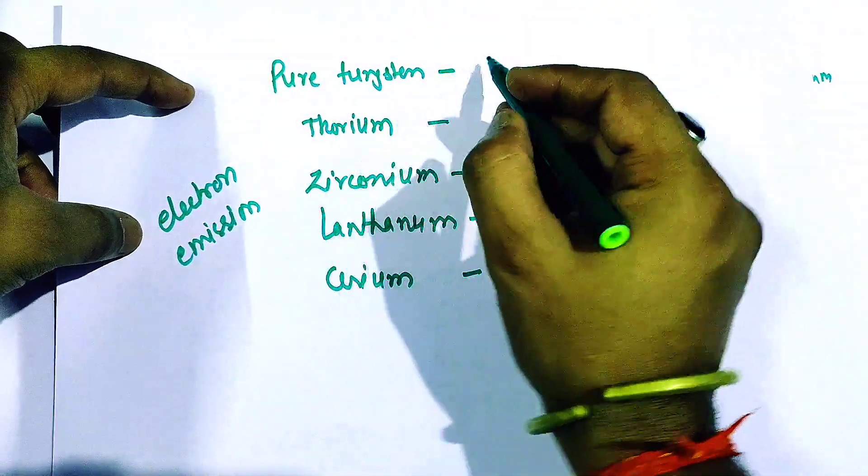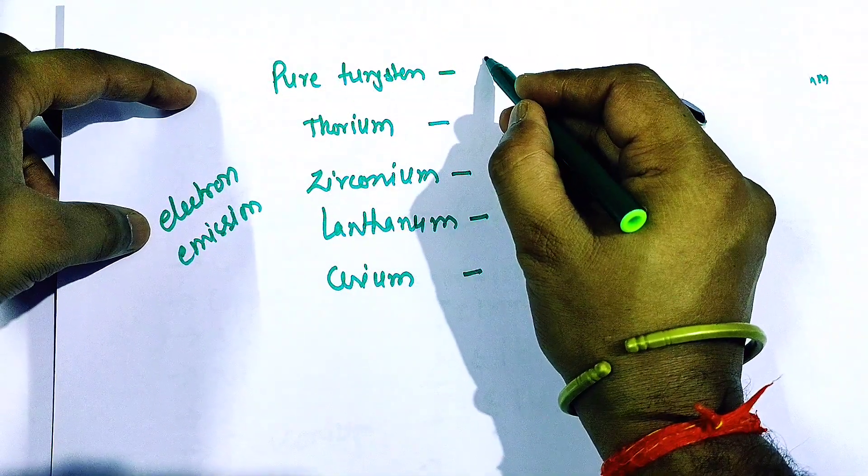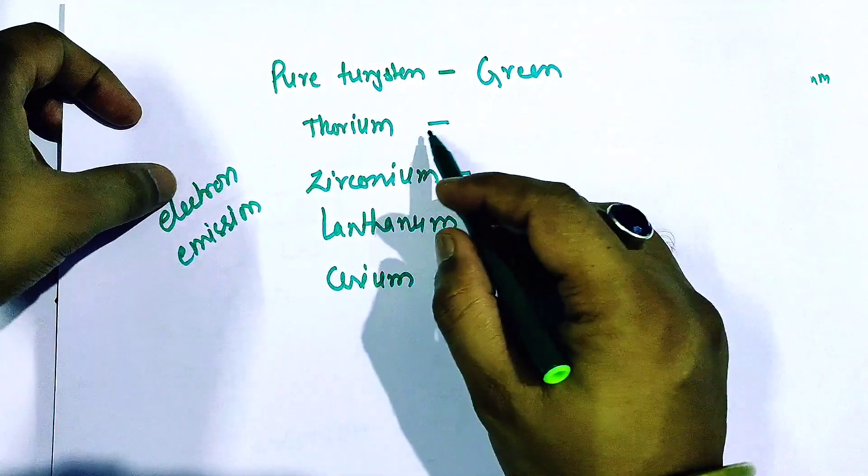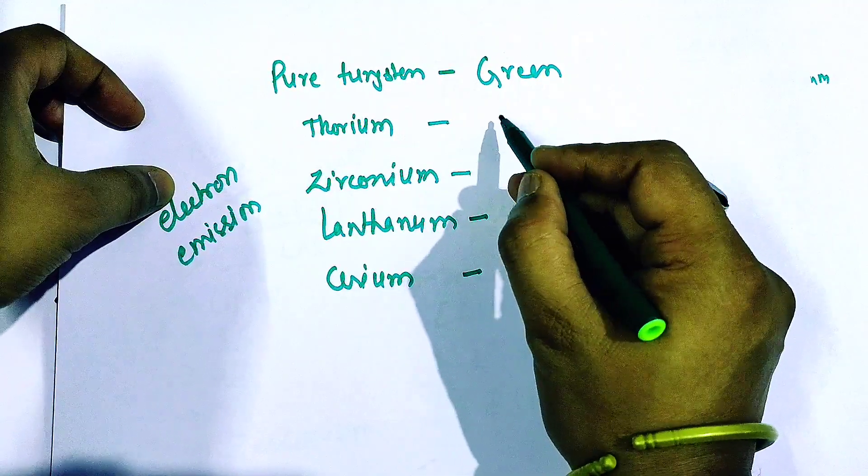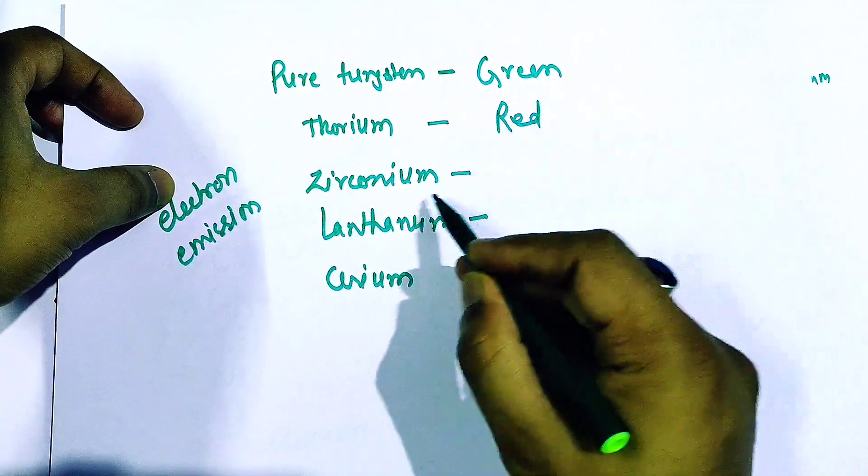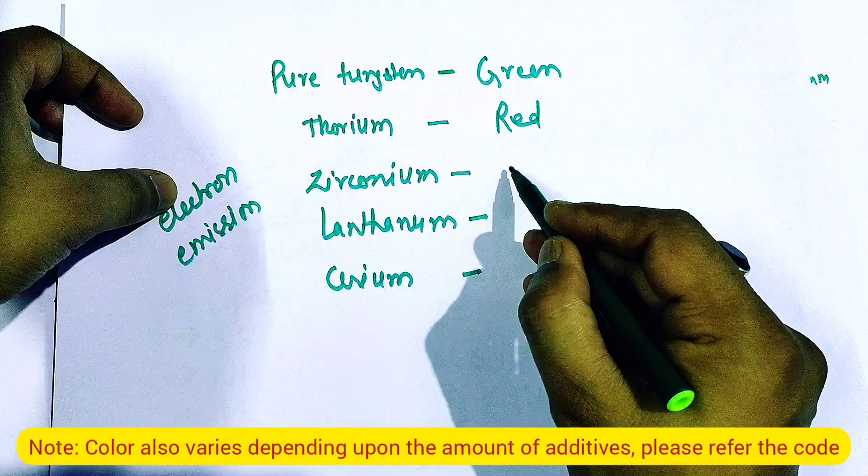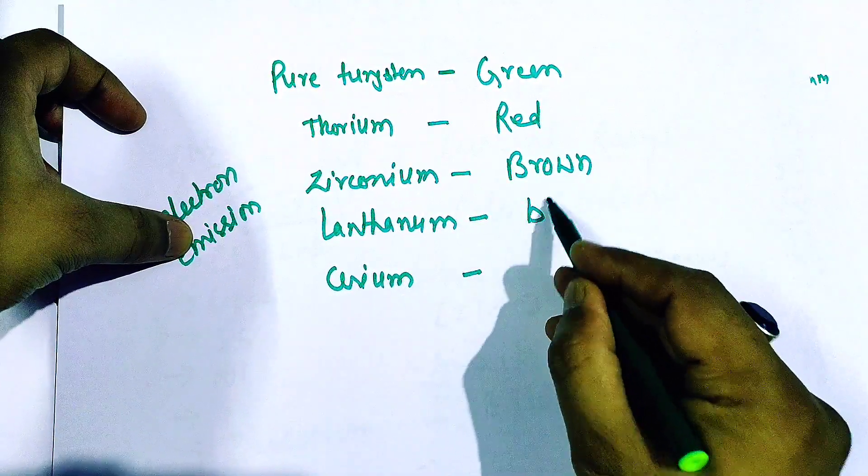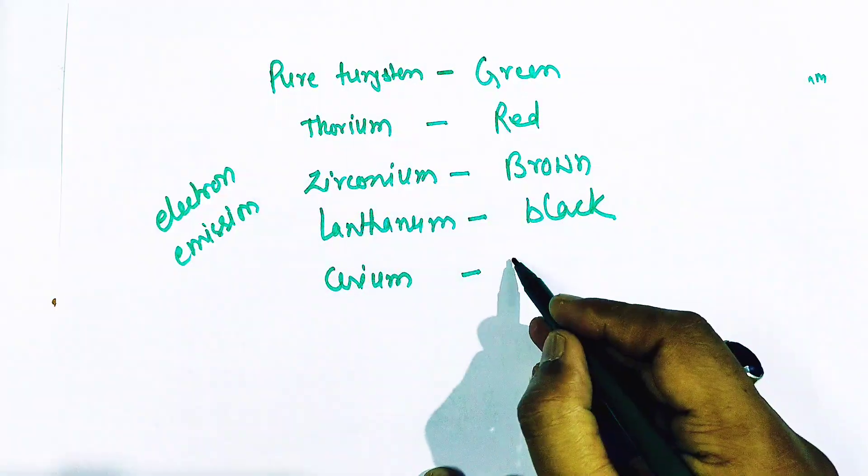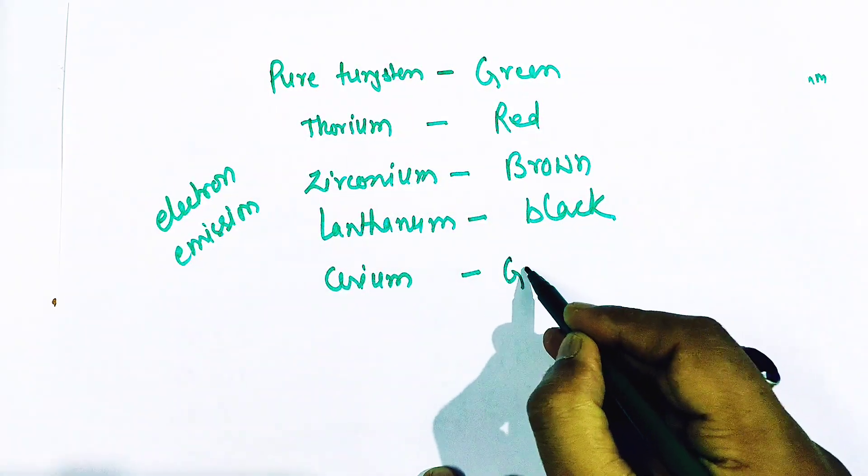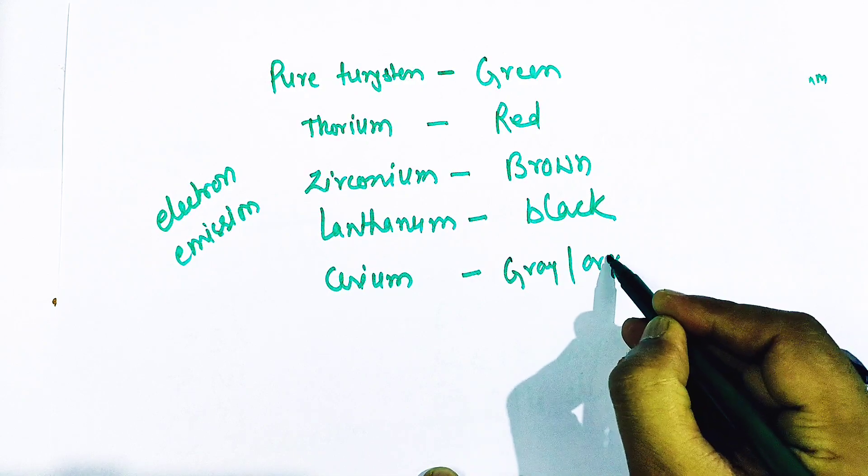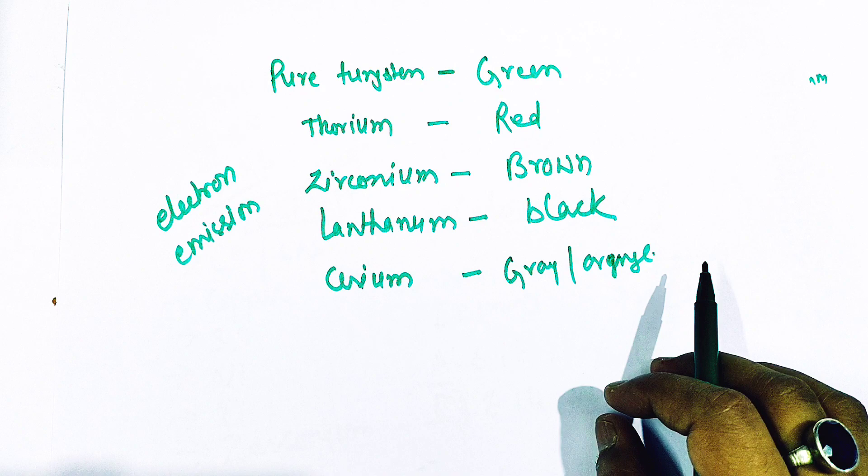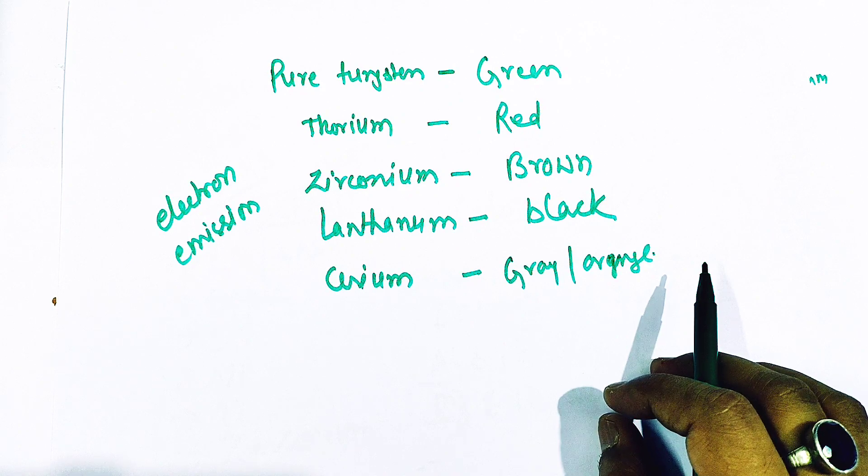So if it is pure tungsten electrode, then the color shall be green. For thorium electrode or thoriated electrode, the color is red. For zirconium electrode, the color is brown. For lanthanum, the color is black. And for cerium, either gray or orange is used. So friends, this is about the color coding of the tungsten electrodes.